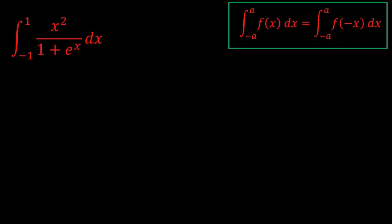Okay, example time. So you see the bounds are -1 to 1. It makes sense to do the minus x substitution. So we replace x with -x in the integrand. The x² won't change because it's an even function. And the e^x becomes e^(-x).